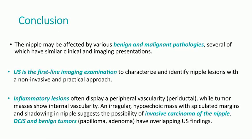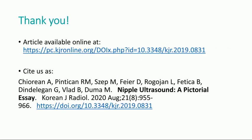Inflammatory lesions often display a peripheral vascularity, periductal or vessels in rim, while tumor masses show internal vascularity. An irregular hypoechoic mass with spiculated margins and shadowing suggests the possibility of invasive carcinoma of the nipple. Ductal carcinoma in situ and benign tumors may have overlapping ultrasound features. Thank you very much for your invitation.